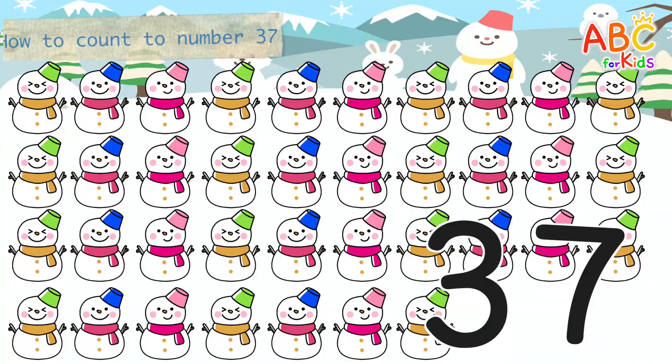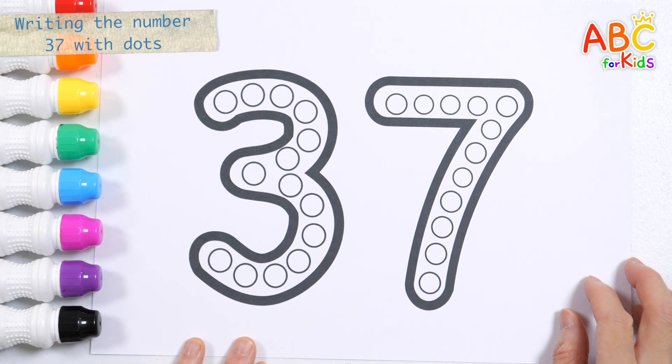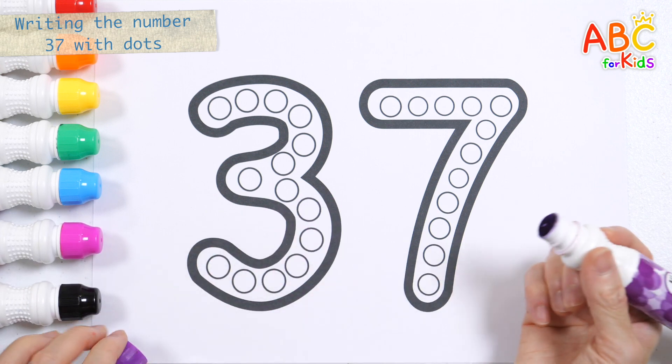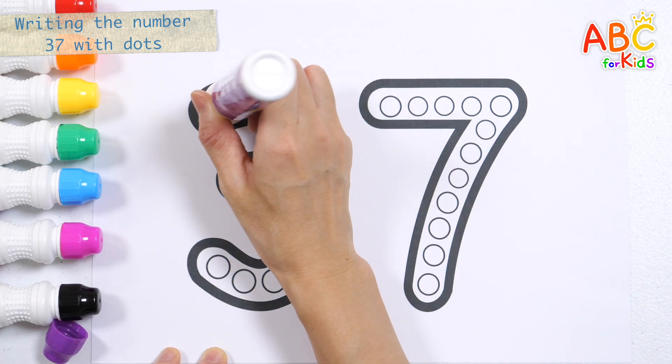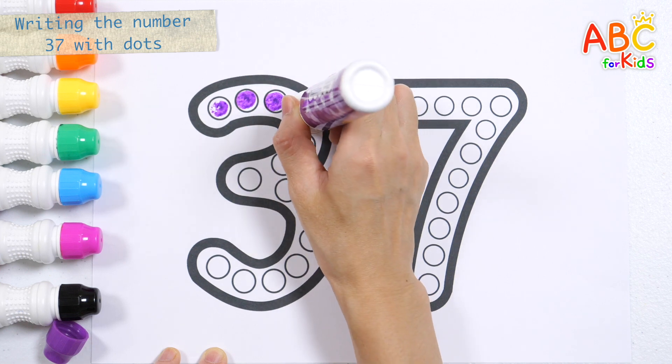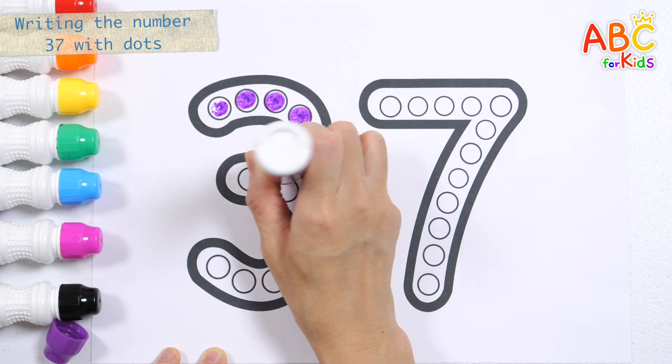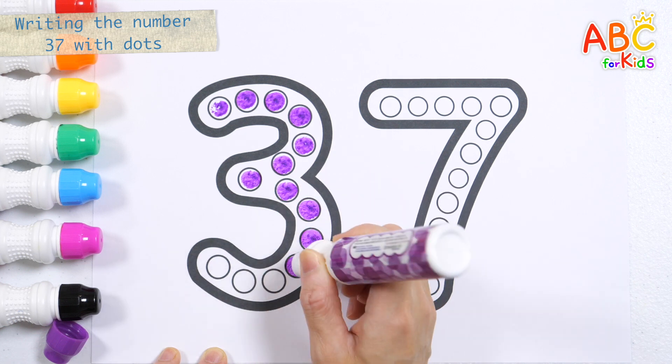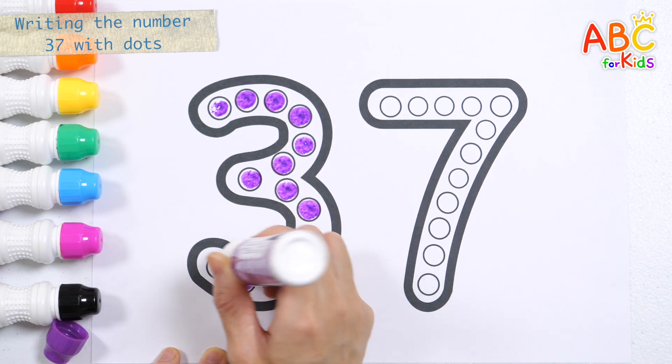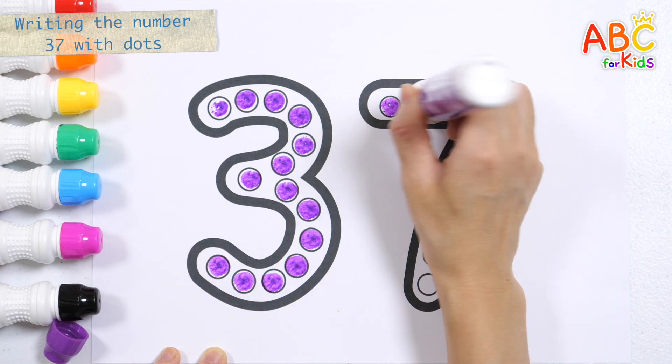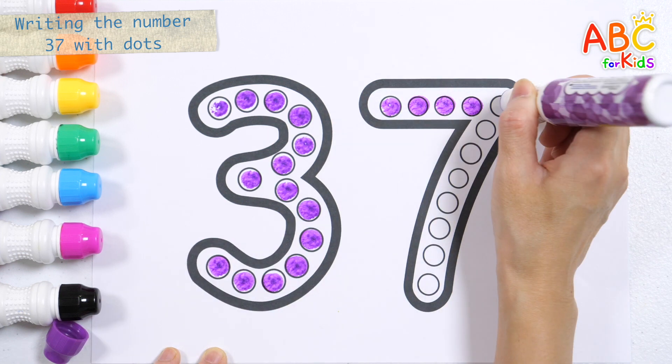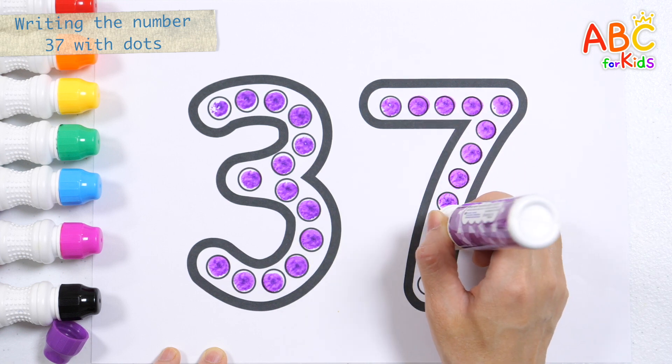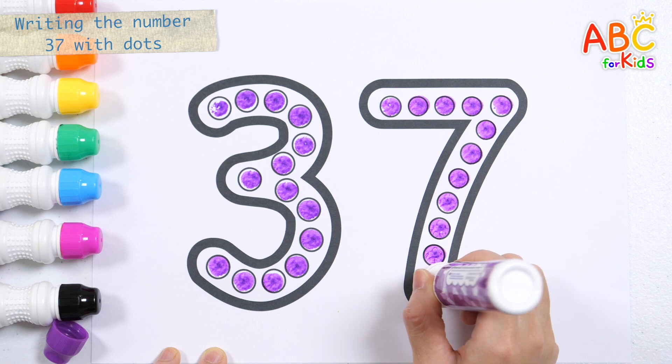37. Shall we write the number 37 by making dots with a purple pen? Let's put dots one by one inside the circle.